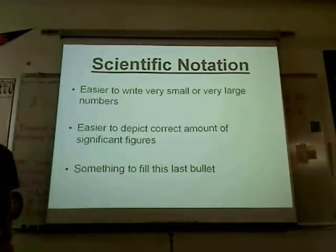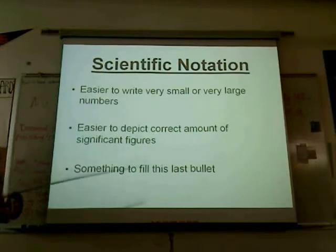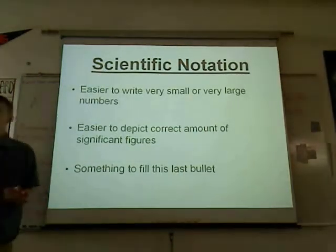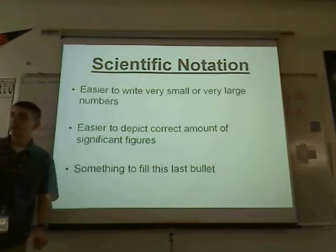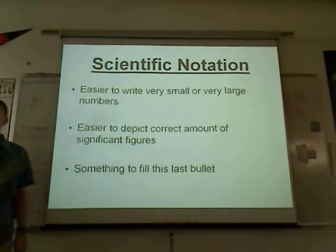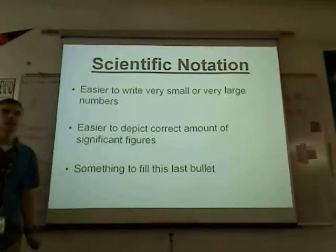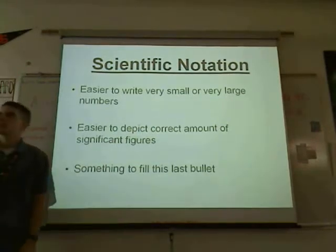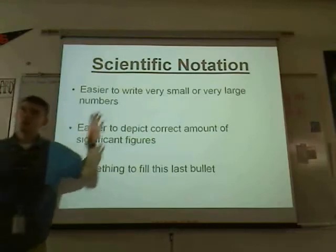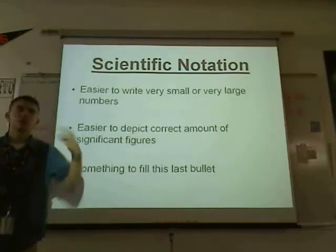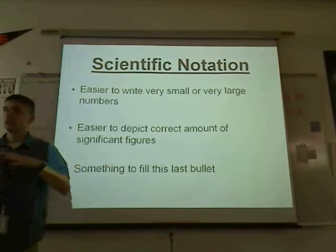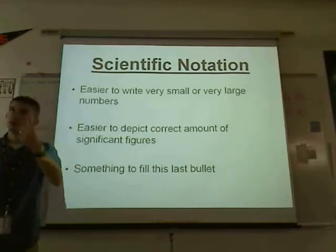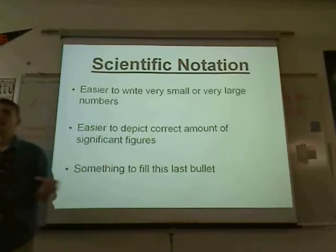Alright, scientific notation. I've got three points here. One: it's easier to write very large and very small numbers — 40 bajillion would take forever to write out by hand. Two, and most importantly: it makes it easier to show the correct number of significant figures. The number 500 — is that 1, 2, or 3 sig figs? It's hard to tell. But with scientific notation, 5 times 10 to the 2 is 1 sig fig; 5.0 times 10 to the 2 is 2 sig figs; and 5.00 times 10 to the 2 would be 3 sig figs.